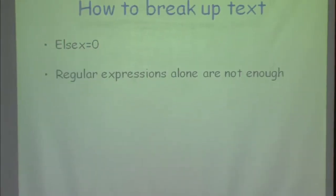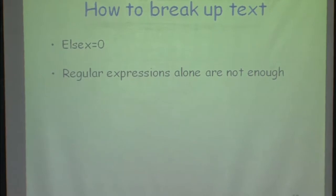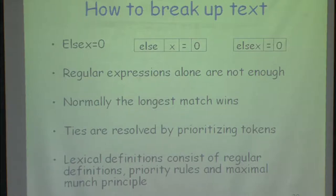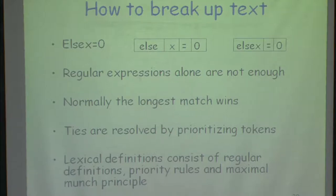How do we break up text? Here are two examples. If I say 'elsex = 0', there are two ways I may break it: either as 'else' + 'x = 0', or as 'elsex = 0'. The maximal munch principle says I should break it as 'elsex' because this matches the specification of an identifier. Normally the longest match wins, and ties are resolved by prioritizing tokens listed earlier. Lexical definition basically consists of regular definitions, priority rules, and the maximal munch principle. Together these become the specification for your lexical analyzer — not just the specifications of the tokens alone.